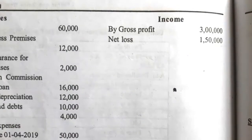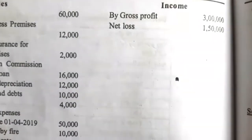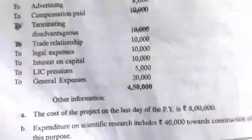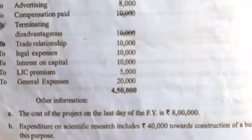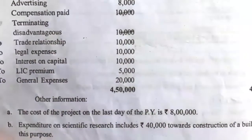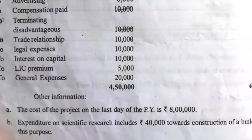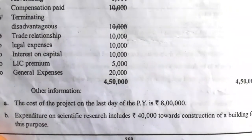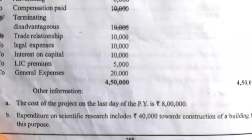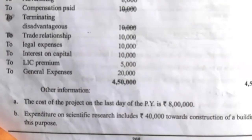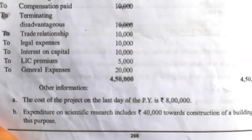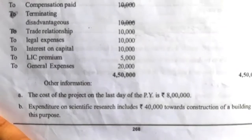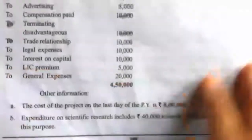On the credit side: gross profit 30,00,000; net loss 1,50,000. Additional information: the cost of the project on the last day of the previous year is rupees 8,00,000. Expenditure on scientific research includes rupees 40,000 towards construction of a building for this purpose.